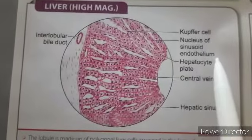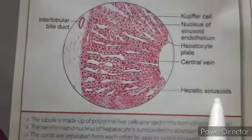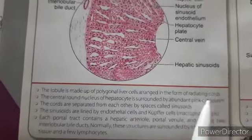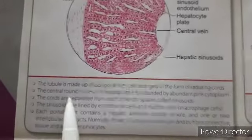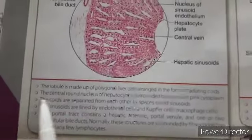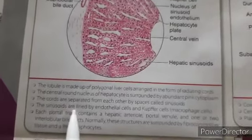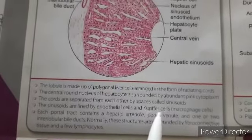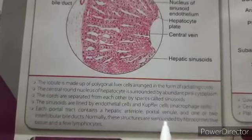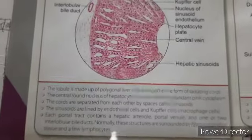Now the histology of the liver. Visible structures include interlobular ducts, Kupffer cells, nucleus of sinusoid endothelial cells, hepatocyte plates, central vein, and hepatic sinusoids. The lobule is made up of polygonal liver cells arranged in radiating cords. The central round nucleus of the hepatocyte is surrounded by abundant pink cytoplasm. The cords are separated by spaces called sinusoids, which are lined by endothelial cells and Kupffer cells. Each portal tract contains a hepatic artery, portal venule, and one or two interlobular bile ducts.